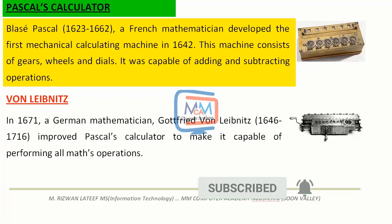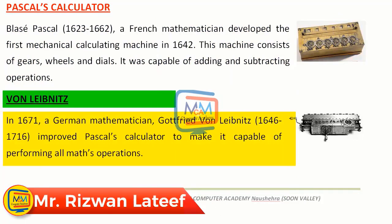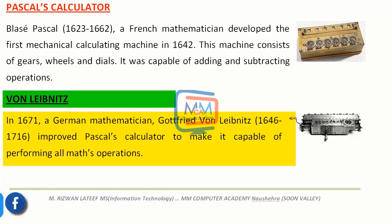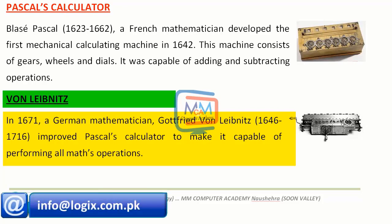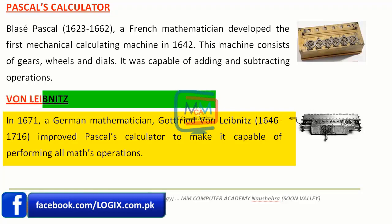The next one is Gottfried Wilhelm Leibniz. In 1671, a German mathematician, Leibniz (1646 to 1716), improved Pascal's Calculator to make it capable of performing all mathematical operations. So Leibniz worked on Pascal's Calculator and improved it so that mathematical operations could be performed in a better way.